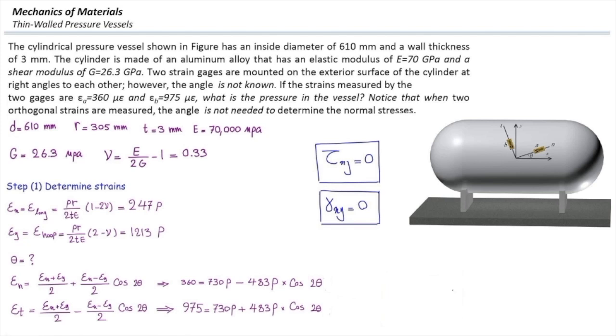So, we have two equations, two unknowns that could be solved for determining theta and p. In this case, p is 914 kilopascals.